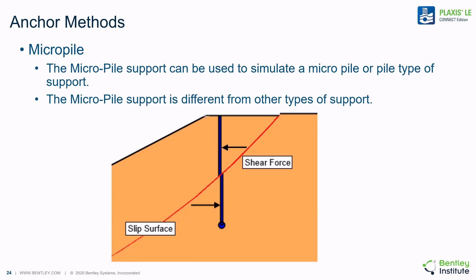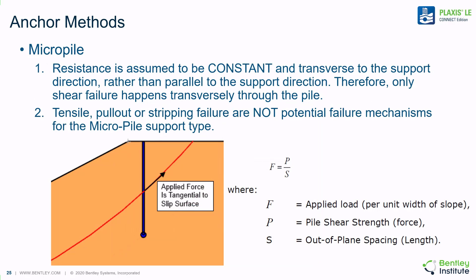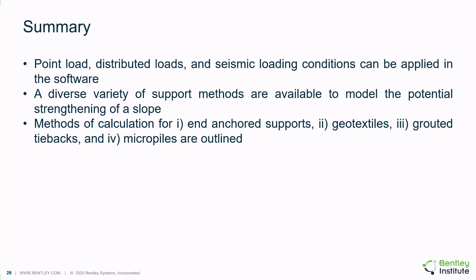Micropiles are vertical support members that can be used to simulate micropiles or piles. Micropile support is treated slightly differently than other types of support, in that primarily shear force along the sliding plane is the primary consideration. With the micropile support method, resistance is assumed to be constant and transverse to the support direction rather than parallel to it. Therefore, only shear failure can happen transversely through the pile. It should be noted that tensile pullout or stripping failures are not potential failure mechanisms for the micropile support type.